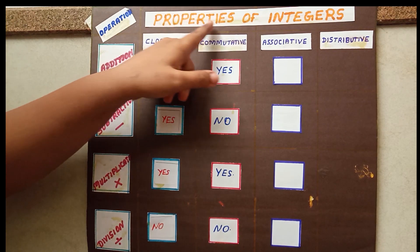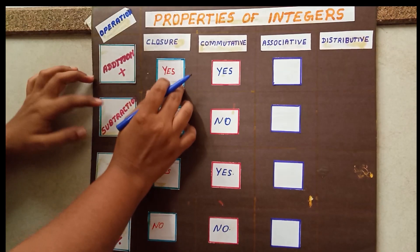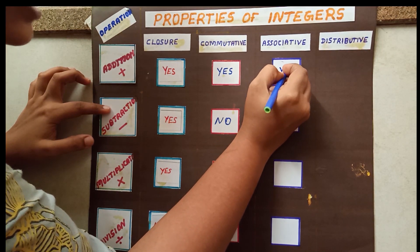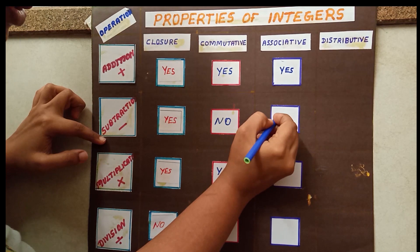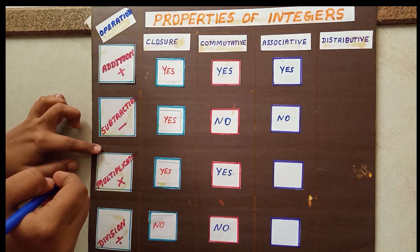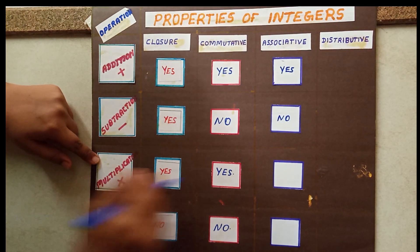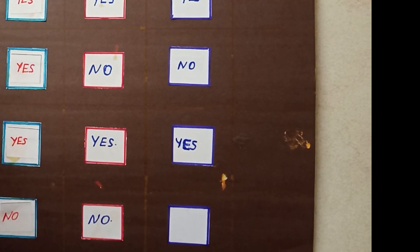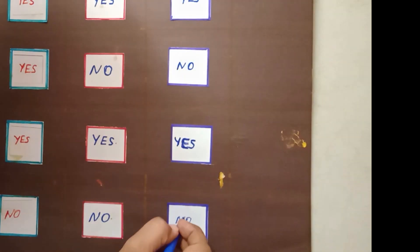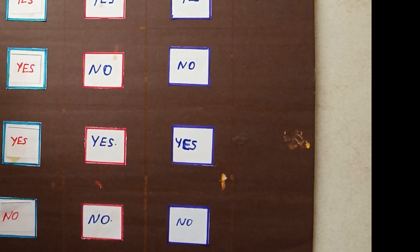Now we are going to fill this chart. First question: does the integer set satisfy associative property under addition? Yes. Under subtraction? No, because (A − B) − C is not equal to A − (B − C). Under multiplication? Yes. Under division? No. I hope you all enjoyed my class. If you have any doubt, please ask through the comment box. If you like my video, please like, share, and subscribe. Signing off — Amy Bijar from Axe Ninjas.